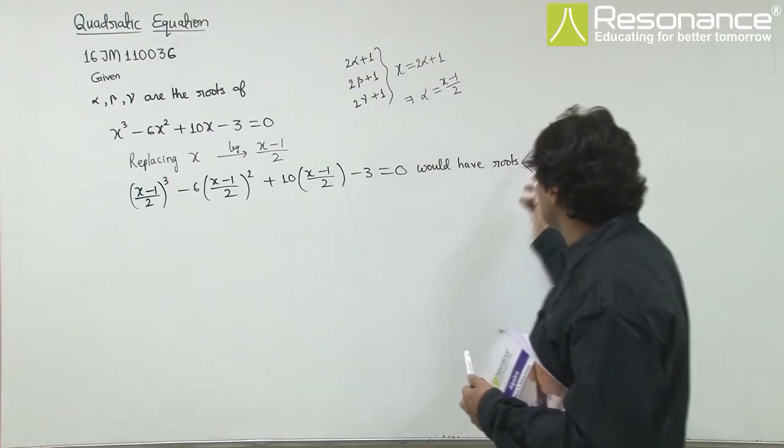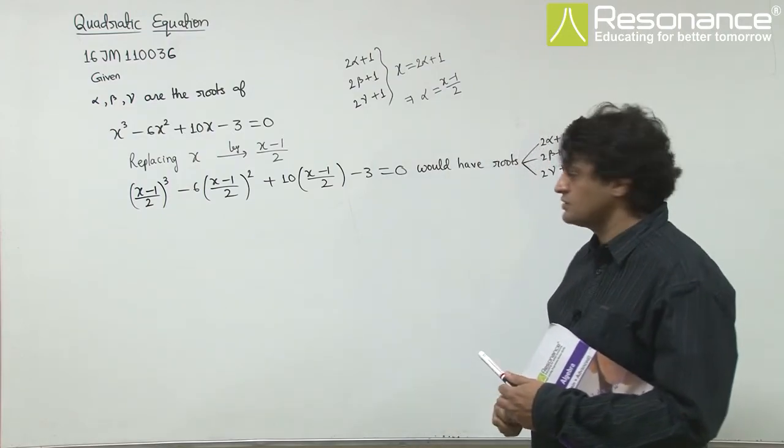Anyway, (x-1)/2 is replaced with this equation will have roots 2α+1, 2β+1, 2γ+1.